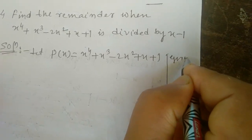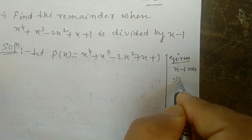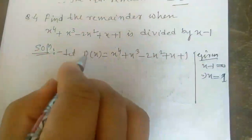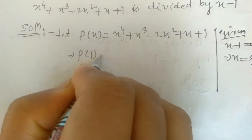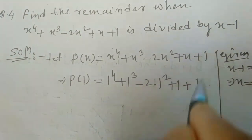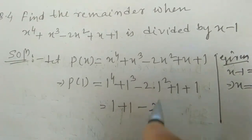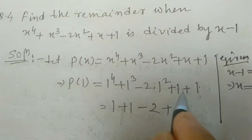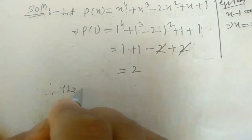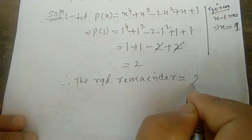The given part is x - 1. Take x - 1 = 0. It is minus, so if you transfer to the other side it becomes plus, giving x = 1. Put this into p(x): p(1) = 1⁴ + 1³ - 2×1² + 1 + 1 = 1 + 1 - 2 + 1 + 1. Positive 2 and negative 2 cancel; 1 + 1 + 1 = 2 + 1 = 2 + 1... so the remainder = 2. Therefore, the required remainder = 2.